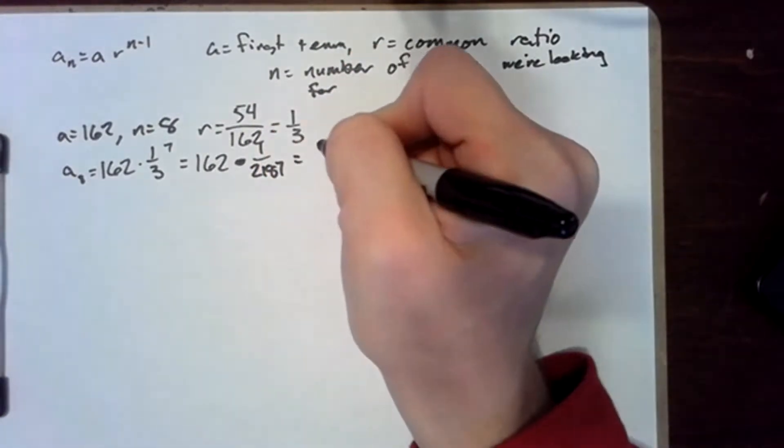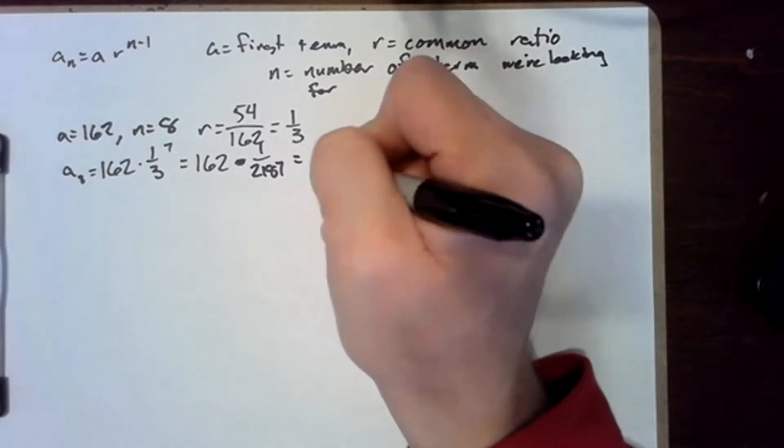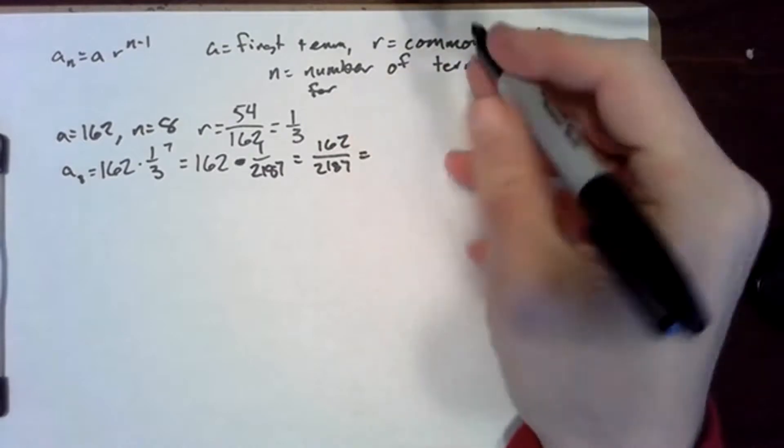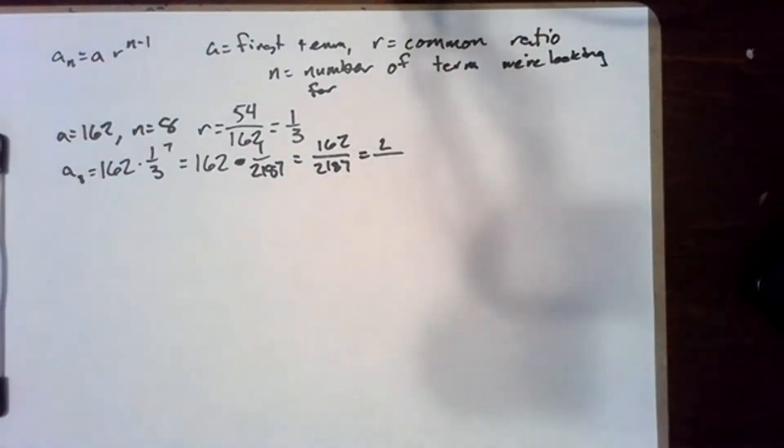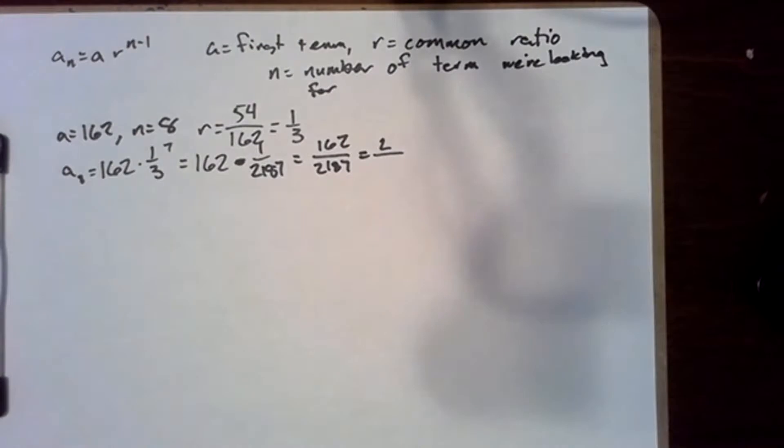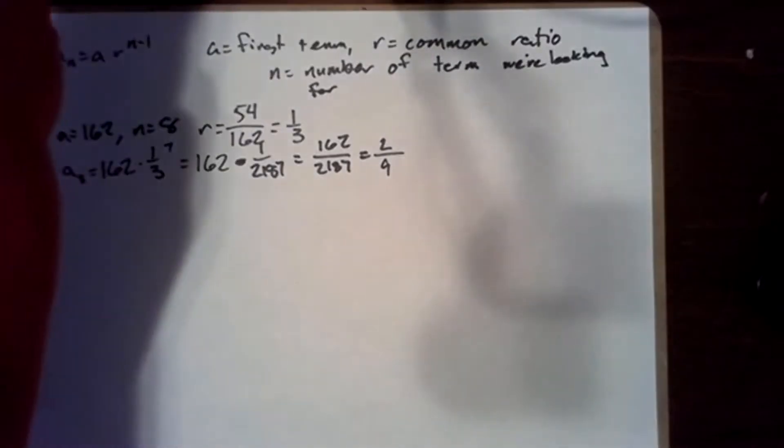So this will be 162 over 2,187, which is going to be the same as 2 over—if the power was right—so that's going to be 243. Yes, 2 ninths. So that's the answer to that first problem.